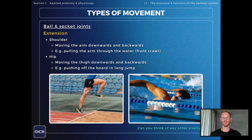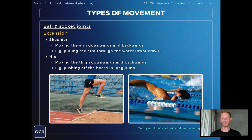Extension, the opposite movement, involves moving the arm downwards and backwards at the shoulder — for example pulling the arm through the water when performing the front crawl. At the hip it involves moving the thigh downwards and backwards, for example pushing off the board in long jump when taking off, or propelling the body forwards when running.